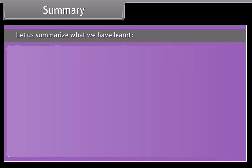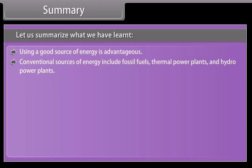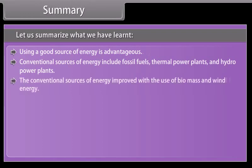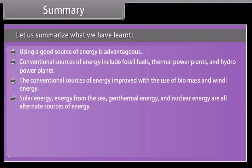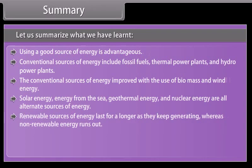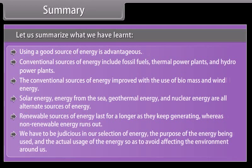Summary. Let us summarize what we have learnt. Using a good source of energy is advantageous. Conventional sources of energy include fossil fuels, thermal power plants, and hydropower plants. The conventional sources of energy are supplemented with biomass and wind energy. Solar energy, energy from the sea, geothermal energy, and nuclear energy are all alternate sources of energy. Renewable sources of energy last for as long as they keep generating, whereas non-renewable energy runs out. We have to be judicious in our selection of energy — considering the purpose and actual usage of the energy — so as to avoid affecting the environment around us.